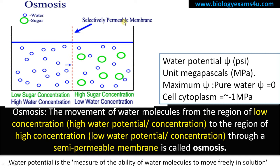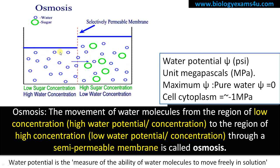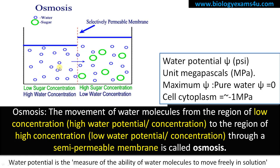If these two solutions are separated by a semipermeable membrane, osmosis is the movement of water molecules from the region of high water potential — that is solution A — to the region of low water potential — that is solution B — through a semipermeable membrane. This is what is actually happening.